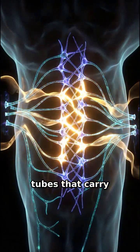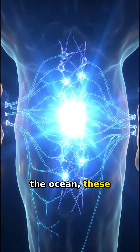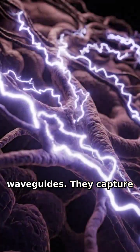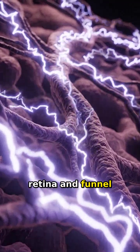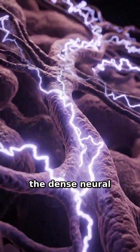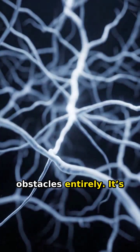Just like the glass tubes that carry high-speed internet under the ocean, these cells act as waveguides. They capture light at the surface of the retina and funnel it smoothly through the dense neural maze, bypassing the obstacles entirely.